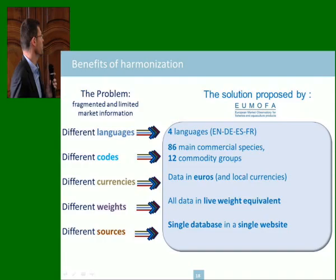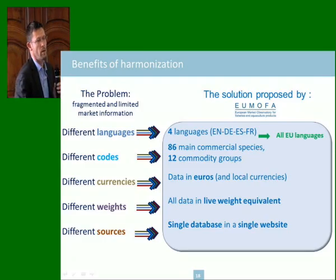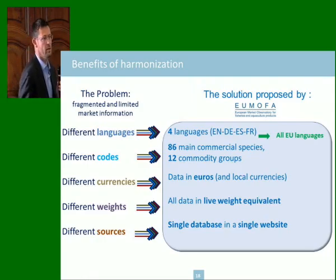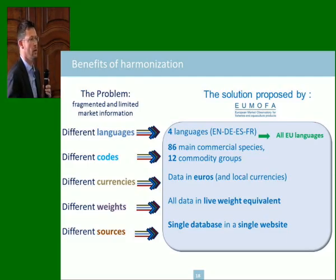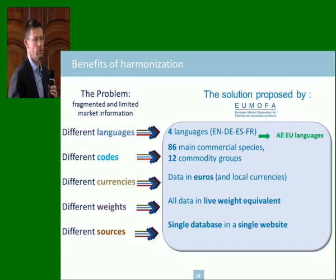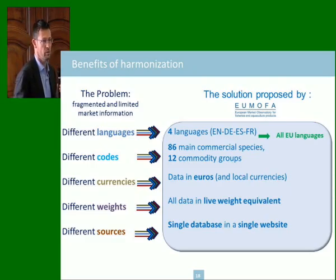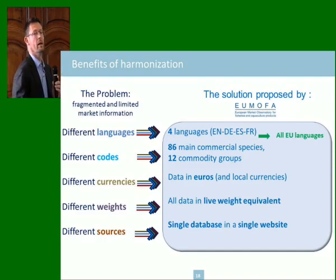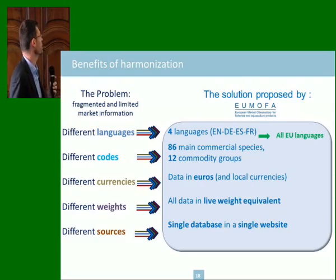The core is a single database on a single website, soon moving to a web application translated into all EU languages. The good thing with data is that you mostly just need to translate the names of the fish. It is important that the Commission makes data analysis available in all languages — fishermen and producer organizations know their business but may not be comfortable working in English, so language accessibility is an important point.